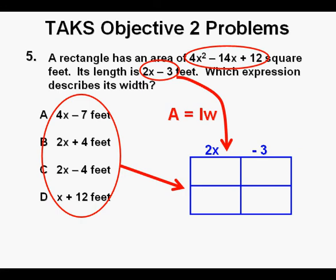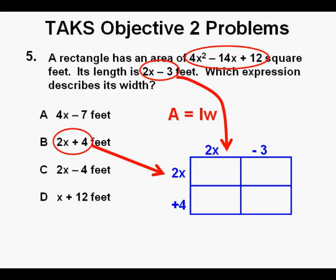Next, we place the expression for length at the top of the box, which is 2x minus 3. Then we're going to try the widths out to see which one multiplies out properly to give the area of the rectangle. Since we need to multiply out to 4x squared, the answer has to be either B or C because that's the only one that comes up with 4x squared between those two factors.